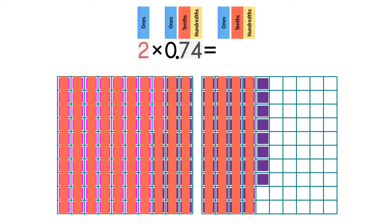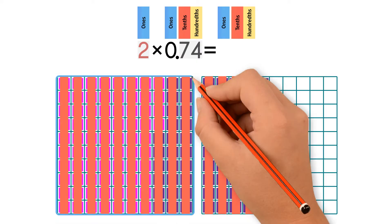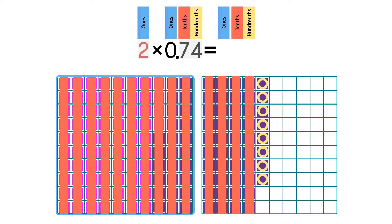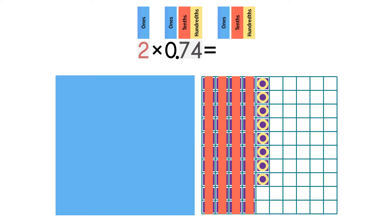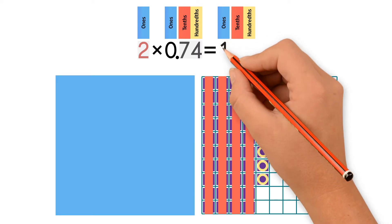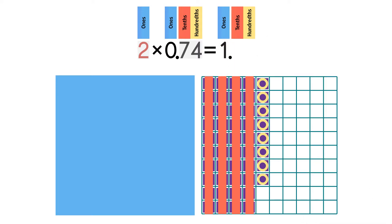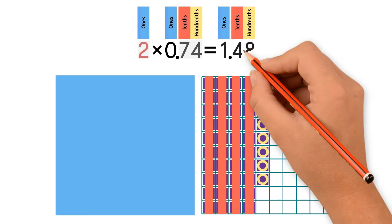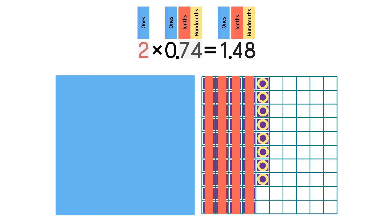We can't put 14 into the tenths column, so we regroup 10 tenths to make one one. We write the one in the ones column. We're left with four tenths and eight hundredths, so our answer is 1.48.